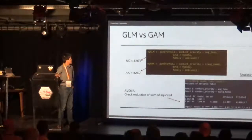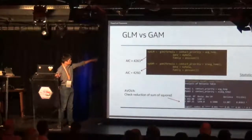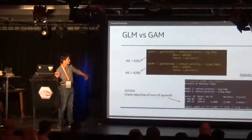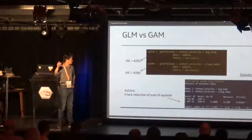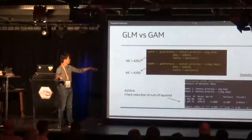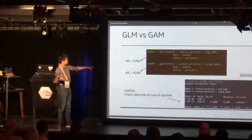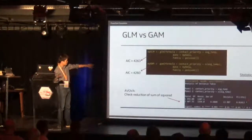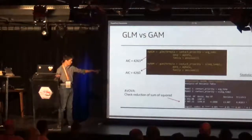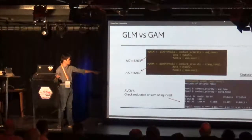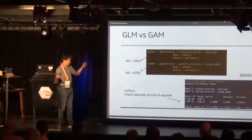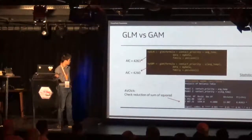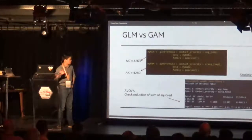We also compared the GAM model and the GLM model. There are two models: the first is a GLM, the second is a GAM, both using Poisson distribution as the response variable. The only difference is that the GAM model has a smoothing spline. We ran both models and clearly the GAM got a much lower AIC, which means the model is simpler and better. You can compare two models using the ANOVA function in R to check whether the drop in residual deviance is significant — and in this case, it clearly is.